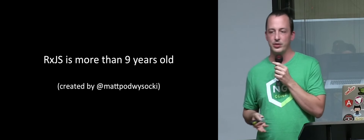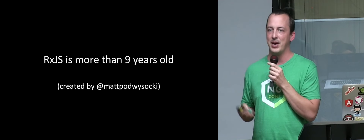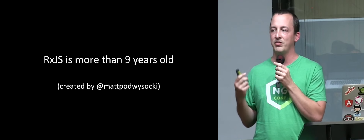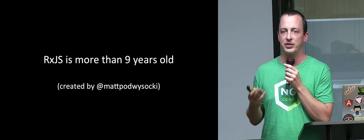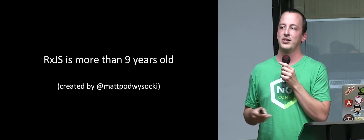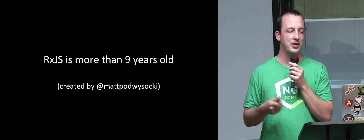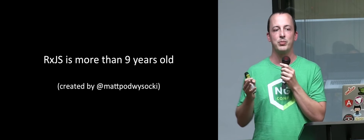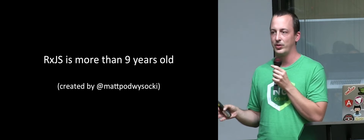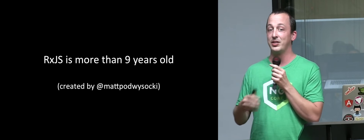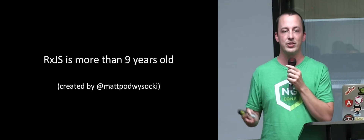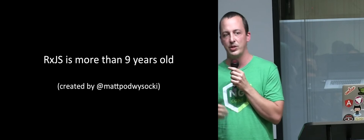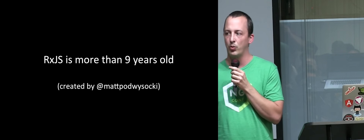RxJS is more than nine years old. It was created by Matt Padwasecki as part of Microsoft's Project Volta. Microsoft's Project Volta was this crazy project where they wanted to make C# compile to JavaScript, and they needed a compilation target for Rx.NET. So the original was like a straight port of that.